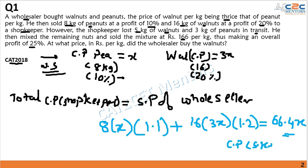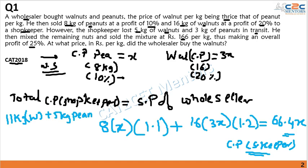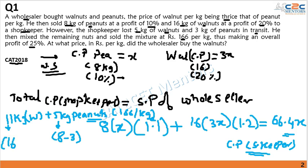The shopkeeper sold the mixture of 11 kg walnuts and 5 kg peanuts at 166 rupees per kg. The 5 kg peanuts comes from the fact that we initially had 8 kg and lost 3 in transit. The 11 kg walnuts comes from 16 minus 5 lost in transit.